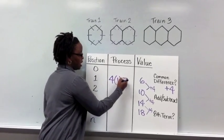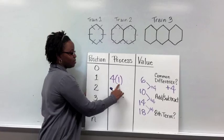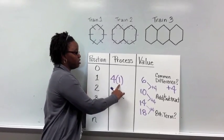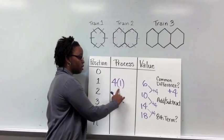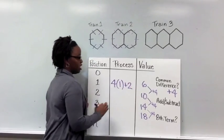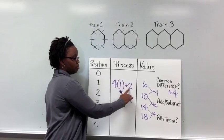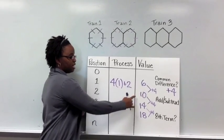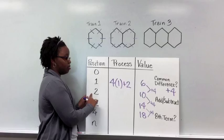Now 4 times 1 only equals 4. So what do I need to do to 4 to get to 6? Add 2. Because 4 times 1 is 4, plus 2 will give me 6. Let's see if the same thing works for position number 2.